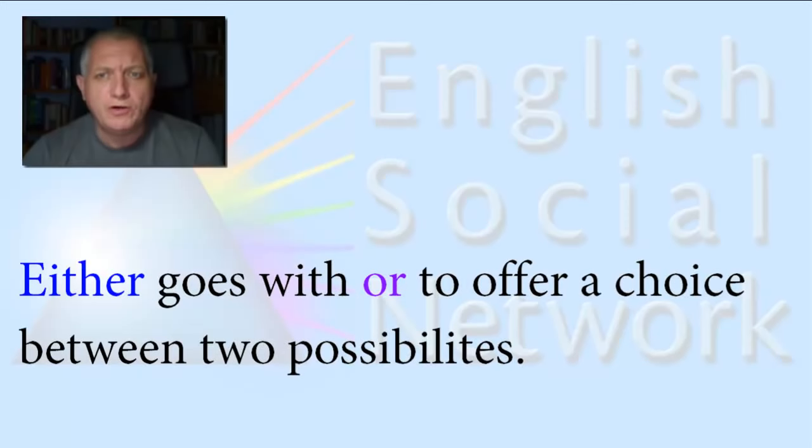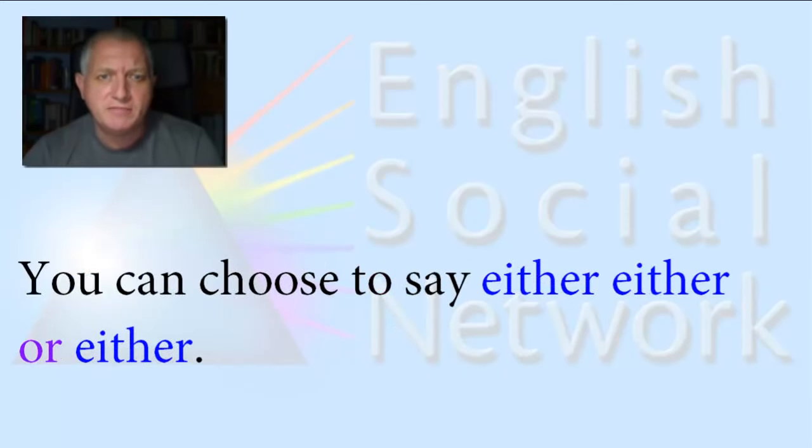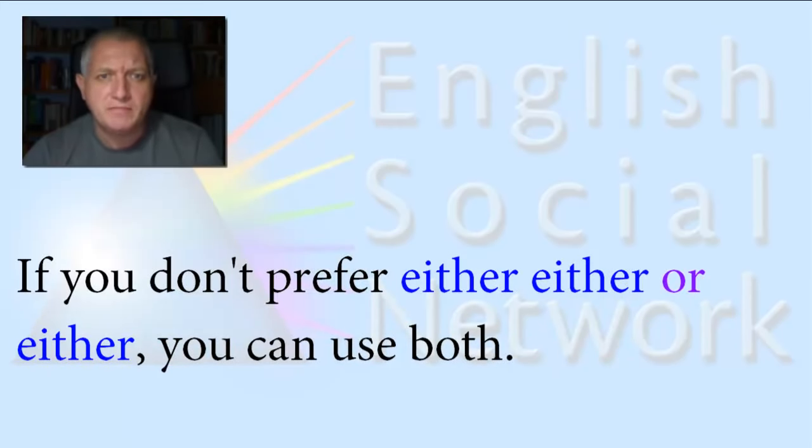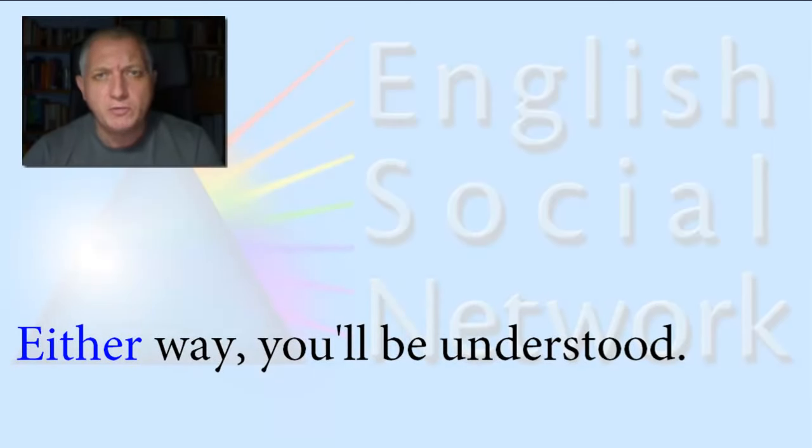Either goes with or to offer a choice between two possibilities. You can choose to say either either or either. Either one of them will do fine. If you don't prefer either, either or either, you can use both. Either way, you'll be understood.